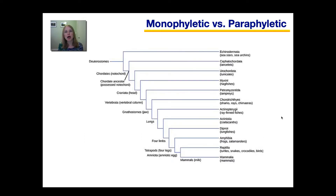Let's first focus on monophyletic versus paraphyletic. A monophyletic group includes the ancestor and all of its descendants. So all mammals could be considered a monophyletic group — they all come from one common ancestor. We could also consider this grouping — amphibians, reptiles, and mammals — to be one monophyletic group, because this grouping includes the ancestor and all of its descendants.